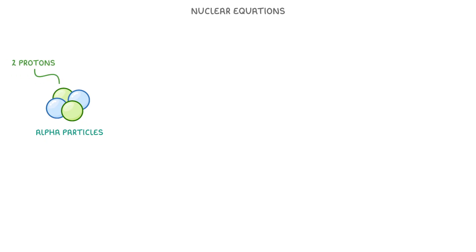As alpha particles consist of two protons and two neutrons, like the nucleus of a helium atom, we generally represent them like this, as helium-4-2, although you might sometimes see them as the Greek letter alpha instead.